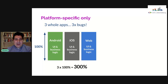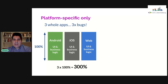So historically, apps on different platforms did not share any code between them. If a company wanted to build three apps — Android, iOS, and web — they would build three whole apps, which also means three times the bugs.